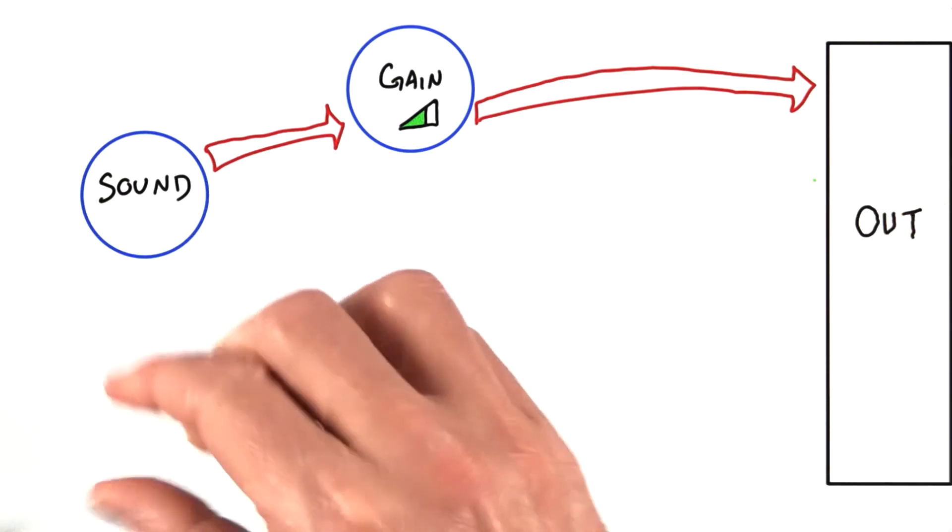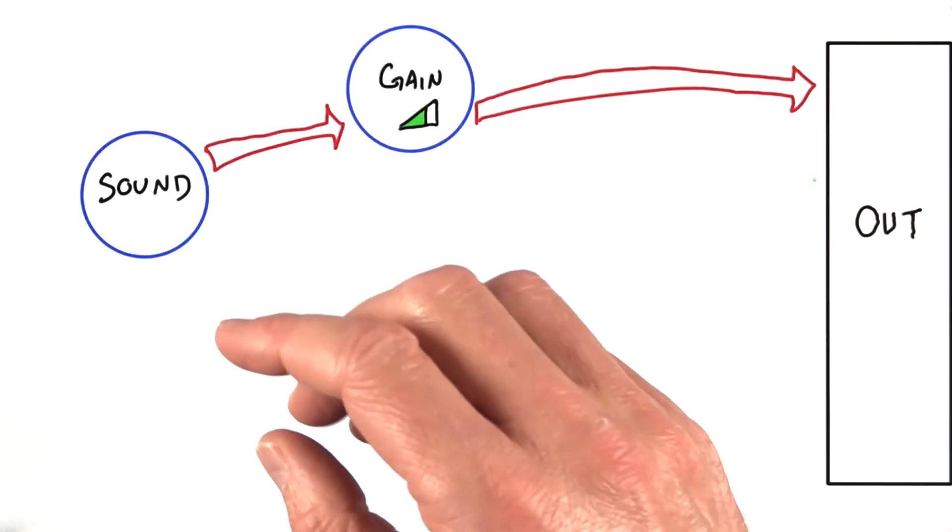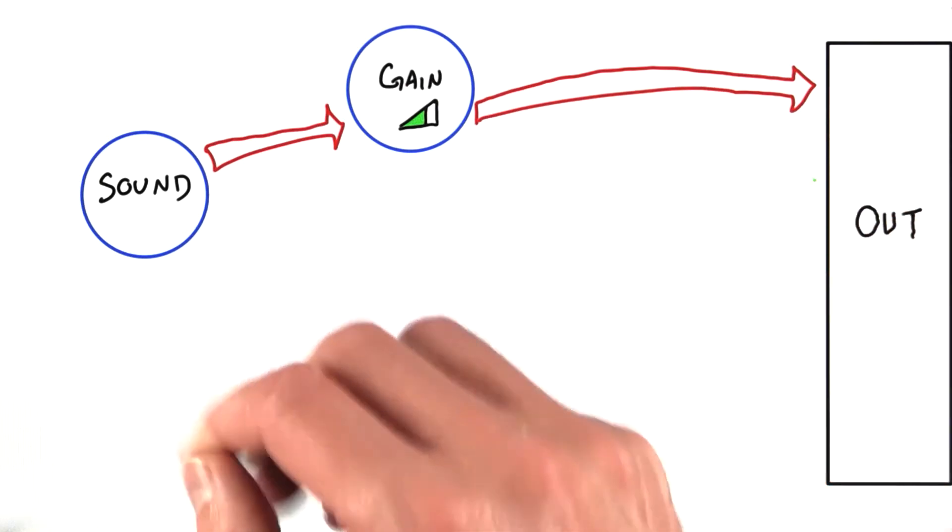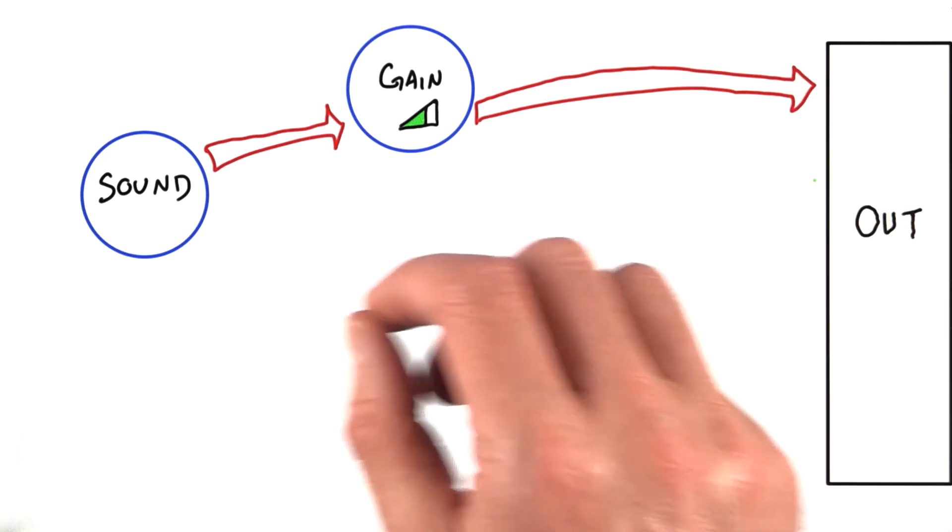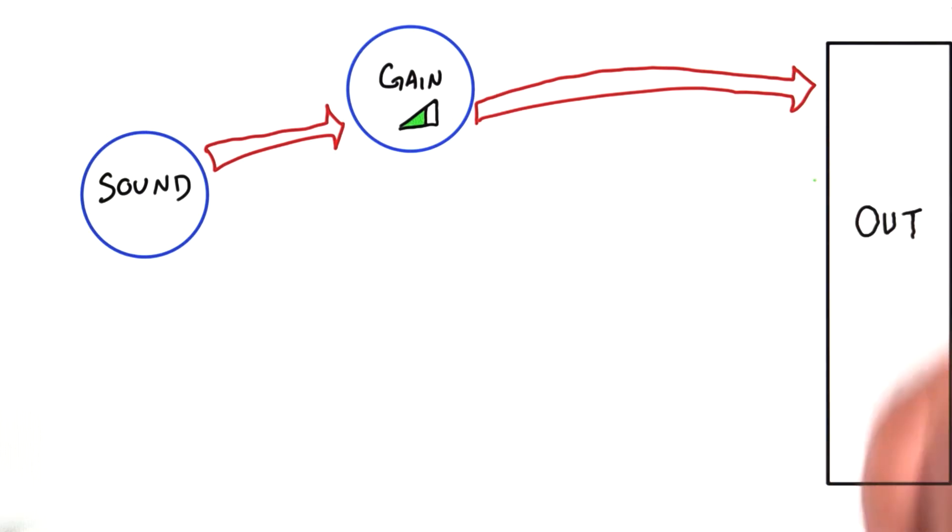The way we do that is by simply disconnecting our main node from the node graph, creating a new one in its place, and connecting it to our output. The new node won't be connected to any of the sound effects the old one was, so we can start from a clean slate.